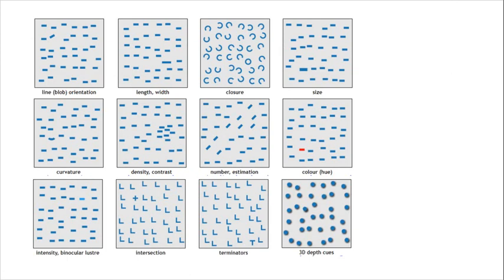So here's kind of a graphic showing all the different ways we can change or offer a little difference to help make a particular item stand out. It's not just color and shape. We can use the orientation, we can use length, we can use curvature, density, the intensity of the color.